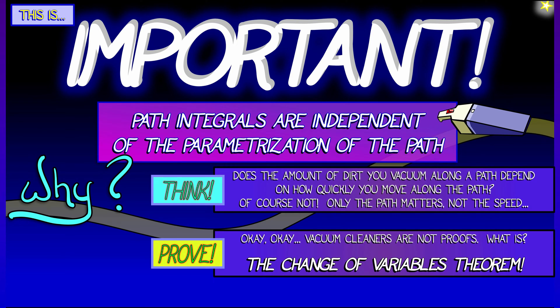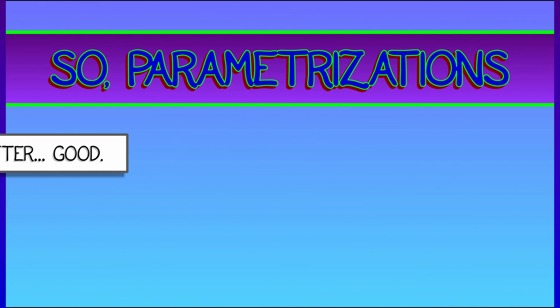But that's not really a proof. What is a proof is the change of variables theorem. Go back, review that theorem, try to see if you can prove that this parametrization does not matter using the change of variables theorem. That's a great exercise.